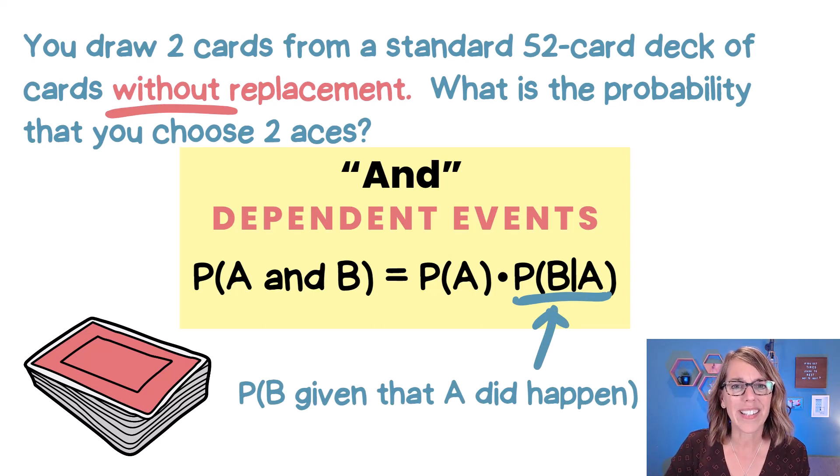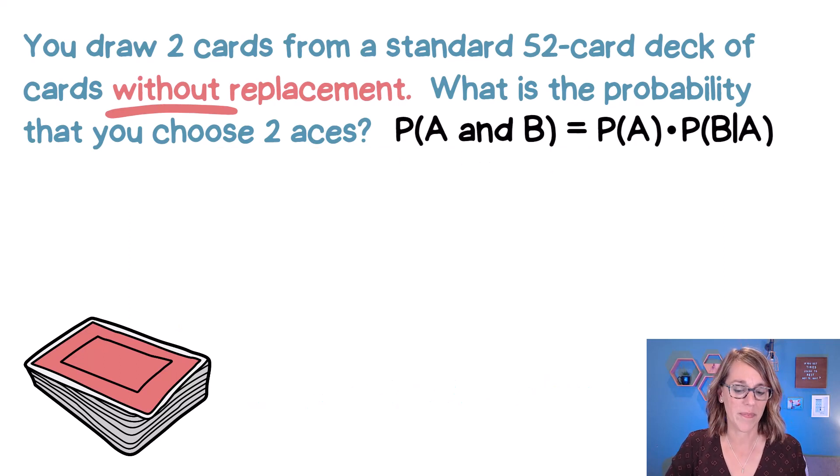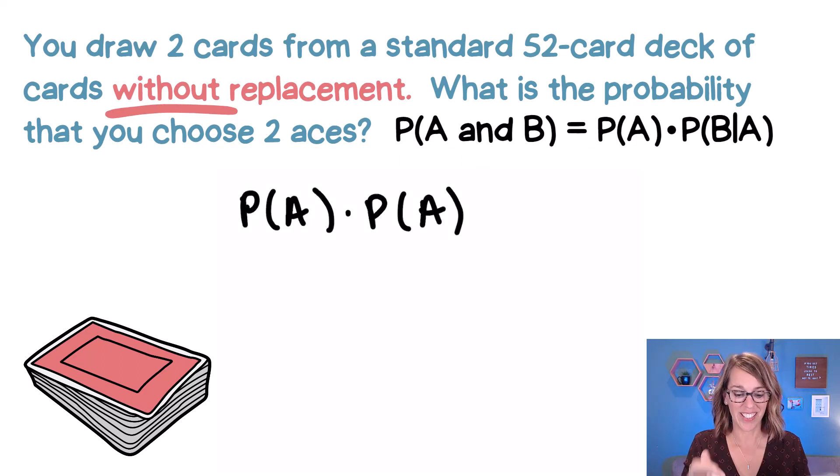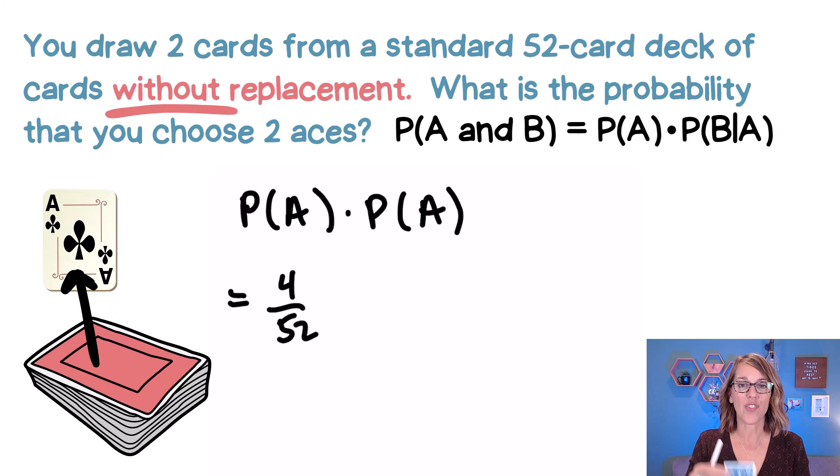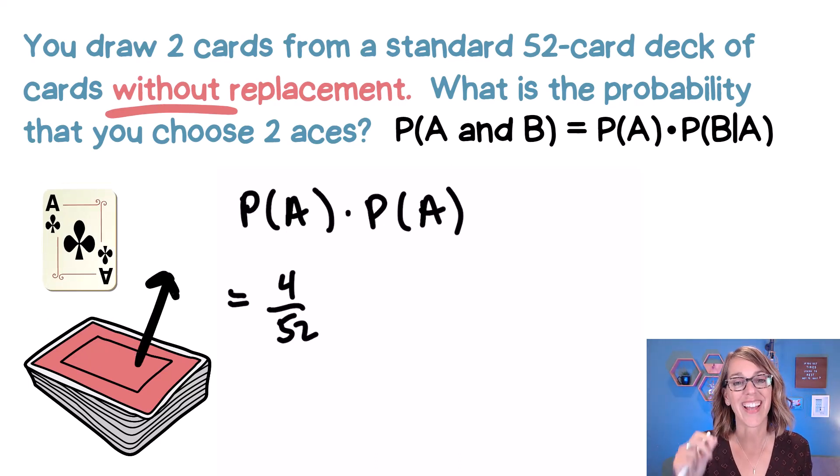Let's take a look at what this means for our problem. When I go to draw that first ace, all four of them are in the deck out of 52 cards total. And I'm going to go ahead and draw that first card, but that first card gets set aside before I go to draw my second one. That means that there are only 51 cards now in my deck. I've taken out the ace of clubs. So there are only three aces left.